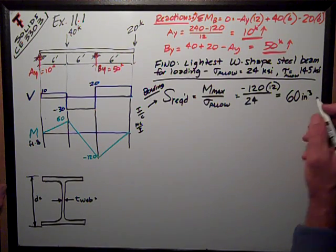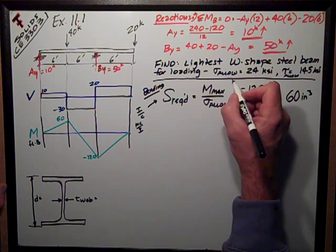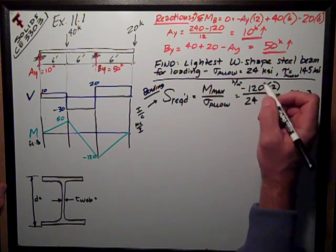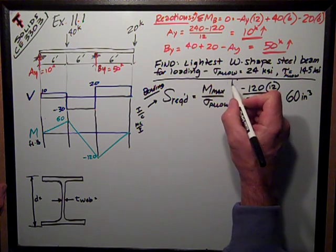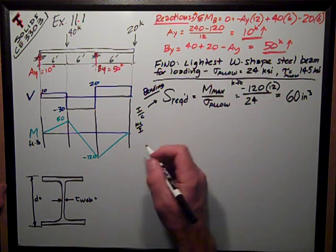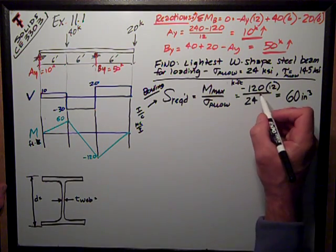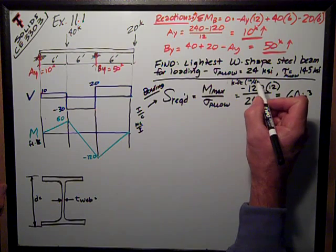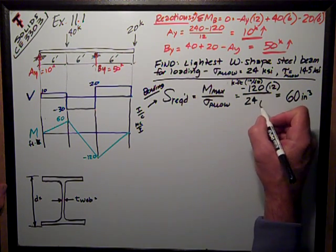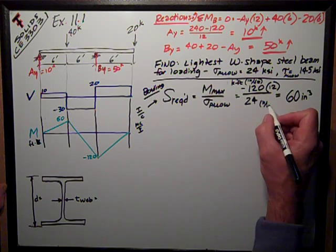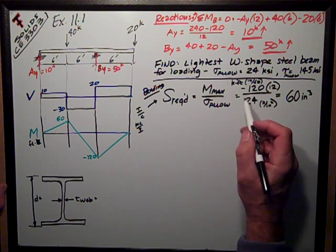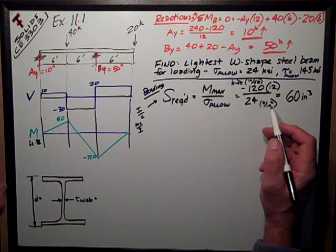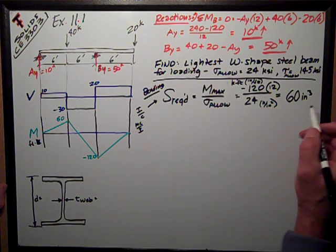And so, I do all that math and I get that I need 60 inches cubed, which is the units of section modulus. So, I want to check my dimensions. I have kip feet, times 12 inches per foot for that conversion factor. This is kips per inch squared. So, what I have is kip inches divided by kip inches squared. Sure enough, that works out to be, the kips cancel and I get inches cubed.